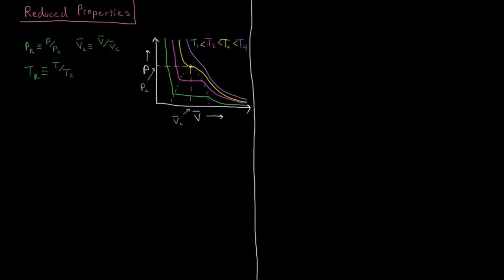If we look at the Van der Waals equation of state, which for a real gas can describe this type of behavior, we have P plus a parameter A over V̄² times (V̄ minus B) equals RT, where A is an attraction parameter and B is a repulsion parameter.